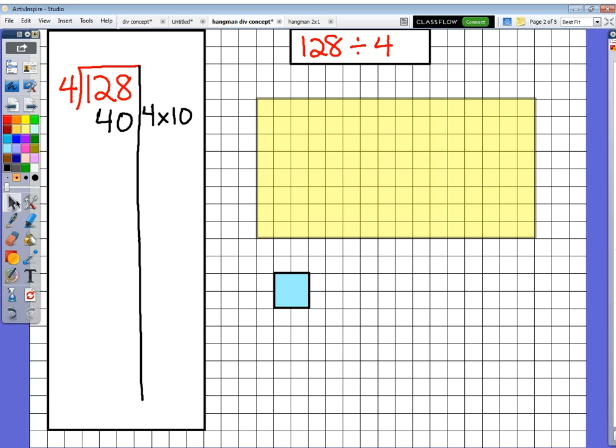Over in my visual representation, I'm going to take this square, which has 4 of the little squares in it, and I'm going to put 10 4's in my yellow array. 1, 2, 3, 4, 5, 6, 7, 8, 9, 10. So I've just filled up 10 4's, which is 40.